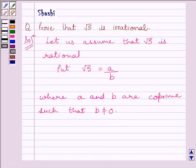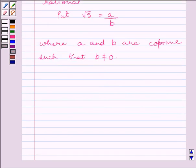Let us recall that two numbers are coprime if they have no common factor other than 1. Now, root 5 equals A upon B implies B root 5 equals A.